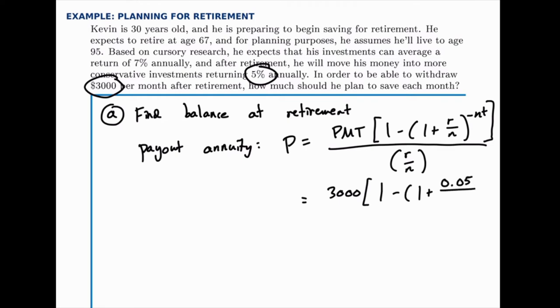Of course, this is a monthly withdrawal, and we're assuming this compounds monthly, so N is 12, and T is the number of years that he'll need to do this.